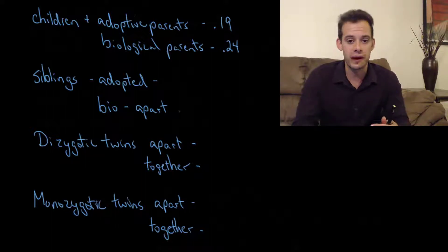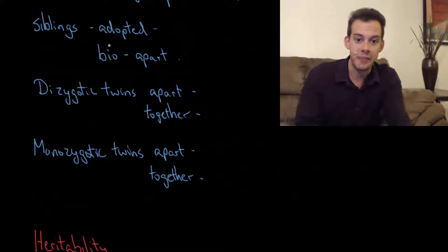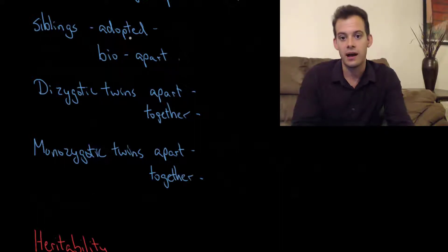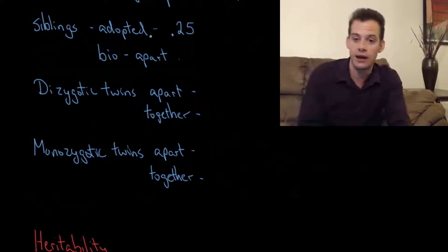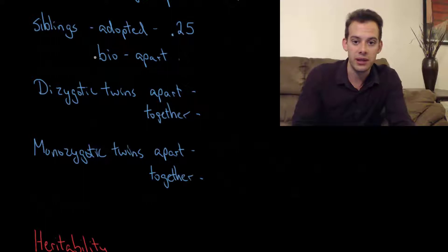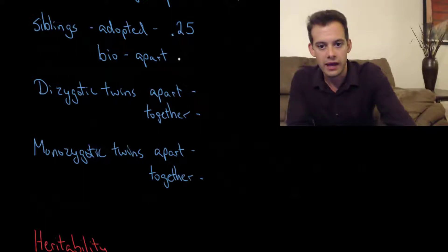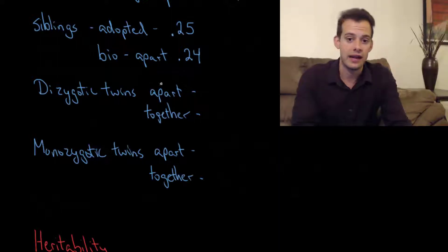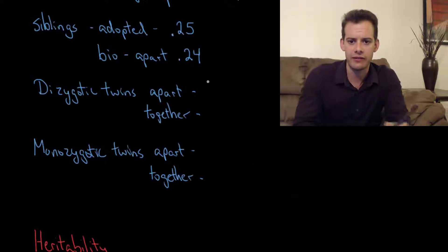This might lead us to want to compare siblings — adopted versus biological siblings. We have adopted siblings who are not genetically related but are living in the same home environment. How similar are their IQs? In this case we get a correlation of about 0.25. Then we could ask about biological siblings raised in different homes — adopted separately, one child to one home, the other to another home. In this case we get about 0.24, fairly similar to adopted siblings. That would again suggest genes are playing a role: these children are genetically related but being raised in different houses, and yet we still have some correlation in their IQ score.